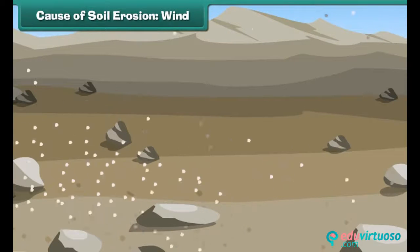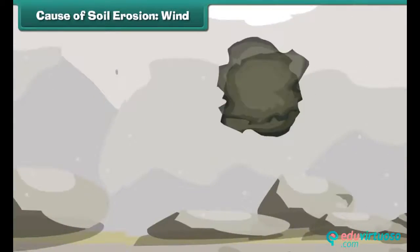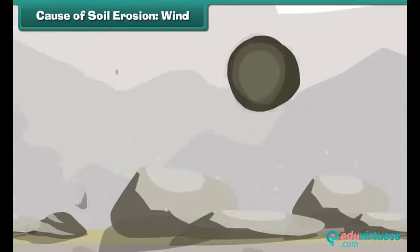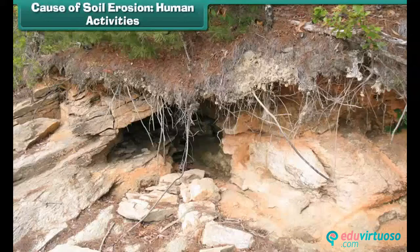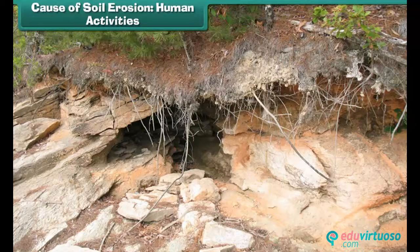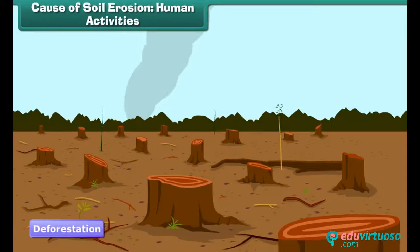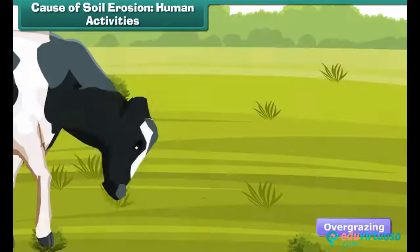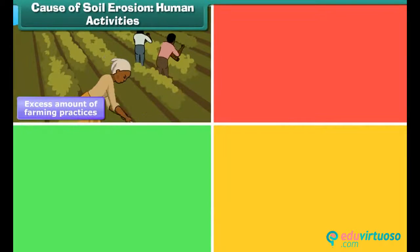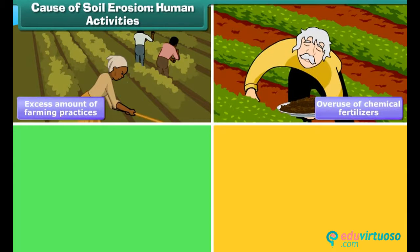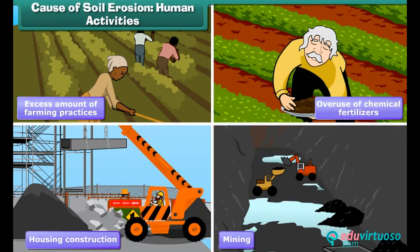The other agent responsible for soil erosion is wind. Wind picks up the finer soil particles and takes them to other locations. During storms, heavy wind takes away the bigger soil particles to a distant place, causing soil erosion. Though soil erosion is a naturally occurring process, it is increased in many cases by human activities, including deforestation, overgrazing by animals, improper or excess farming practices, trail building, overuse of chemical fertilizers, housing construction, and mining.